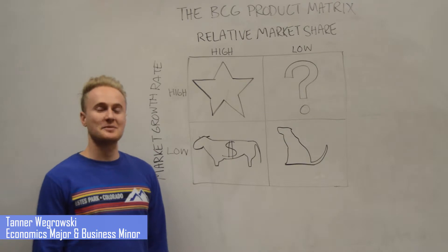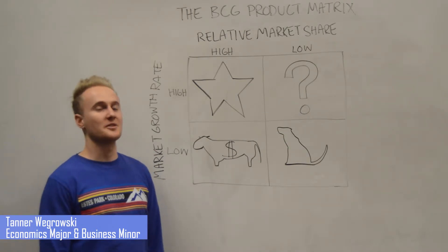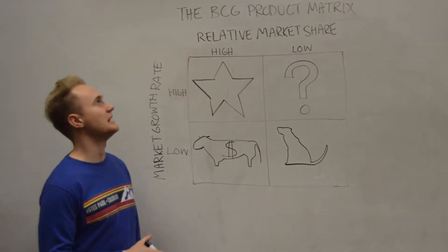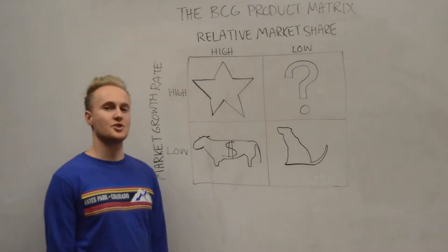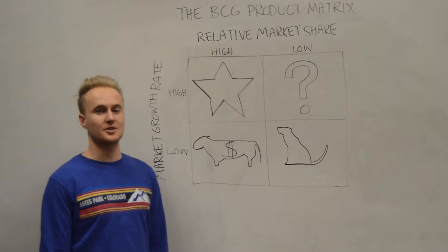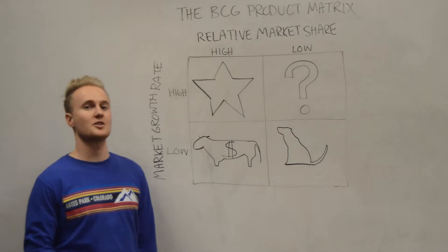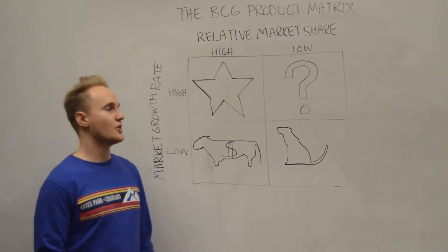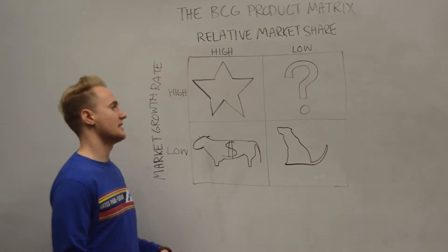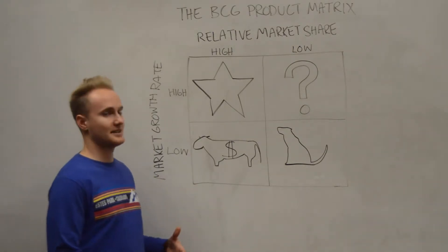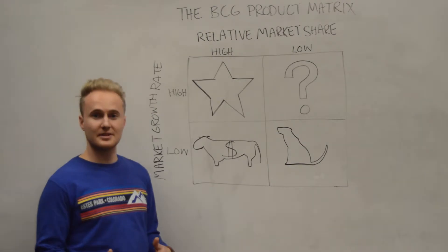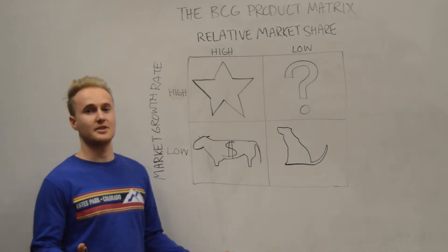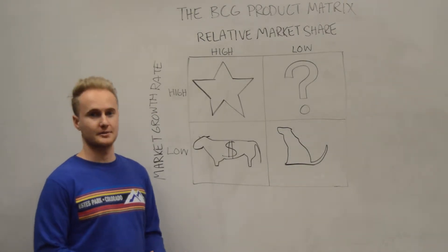Hi, my name is Tanner. I'm going to be talking about the BCG product matrix, which is a tool that companies use for long-term strategic planning to show them whether or not they should invest and develop their products or drop them altogether.